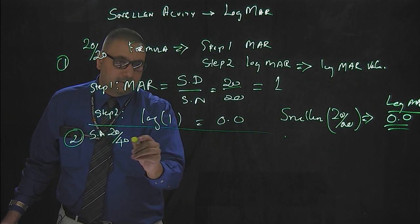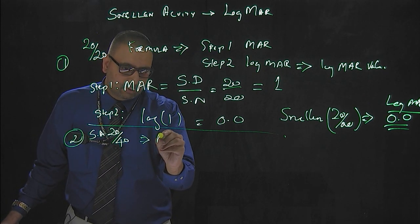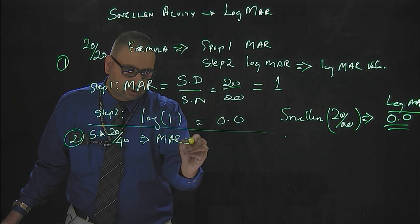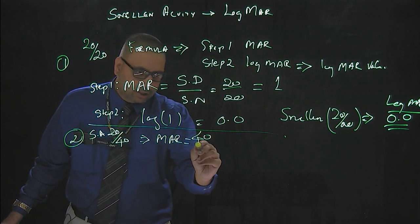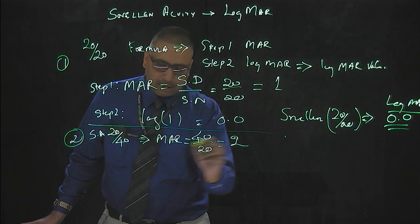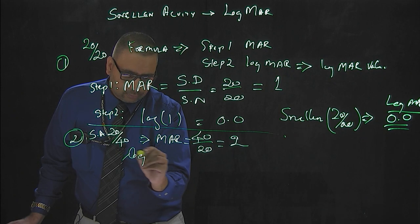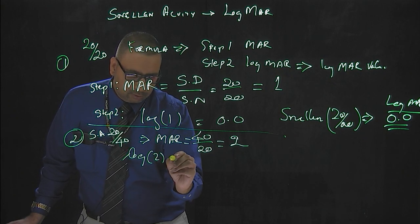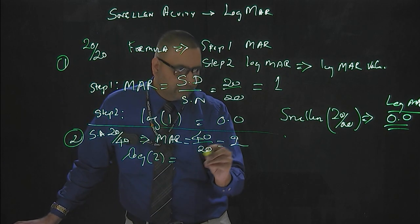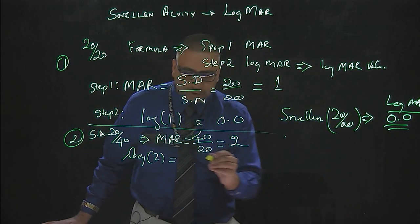For 20/40, the first step is to convert into MAR. As you know, MAR is Snellen's denominator, which is 40, divided by Snellen's numerator which is 20. So here MAR would be 2. And step 2 is log of 2. Log of 2 would give you 0.3.